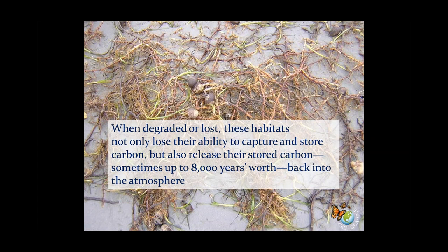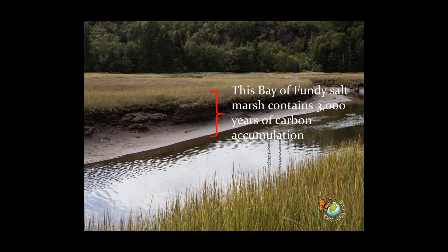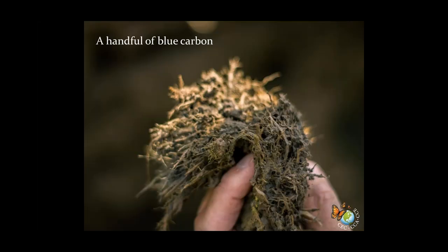When these habitats are degraded or lost, they not only lose their ability to capture and store carbon, but they also release a huge amount of carbon back into the atmosphere — sometimes that's 8,000 years worth of carbon. To help you visualize: this little bit of Bay of Fundy salt marsh contains what's estimated to be 3,000 years of carbon accumulation just in that muddy bank. Even more vivid is a piece of soil from that same bank — a handful of blue carbon.